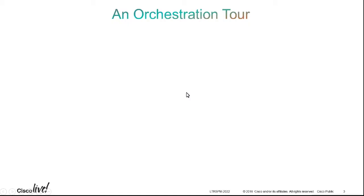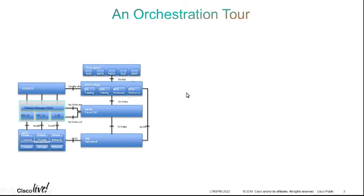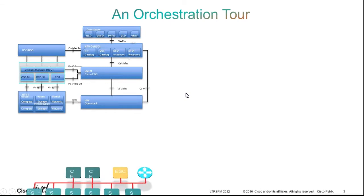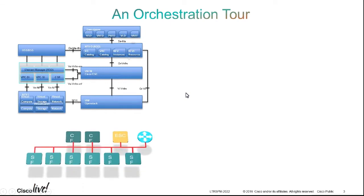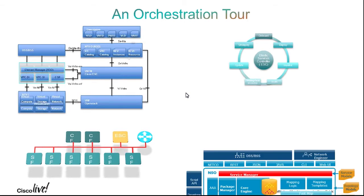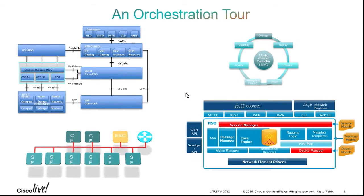We will start with a tour of the ETSI NFV Framework and the Cisco Orchestration Products, to include Virtual Packet Core's Virtual Network Function, Elastic Services Controller, and Network Service Orchestrator.